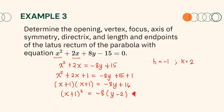Since the squared term is x and 4p is a negative number, the parabola opens downward. Since 4p is equal to 8, the length of the latus rectum is equal to 8 units, and p is equal to 2. Therefore, the directrix and the focus are 2 units away from the vertex. Let us use this information to graph the parabola.